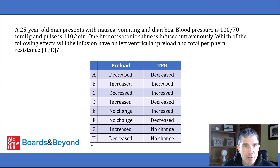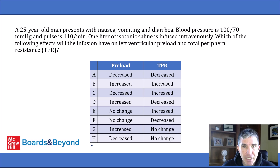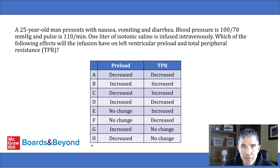The question says: a 25-year-old man presents with nausea, vomiting, and diarrhea. Blood pressure is 100 over 70 and pulse is 110 per minute. One liter of isotonic saline is infused intravenously. Which of the following effects will the infusion have on left ventricular preload and total peripheral resistance? There's a table with about eight or so options for preload and TPR showing increase, decrease, or no change.